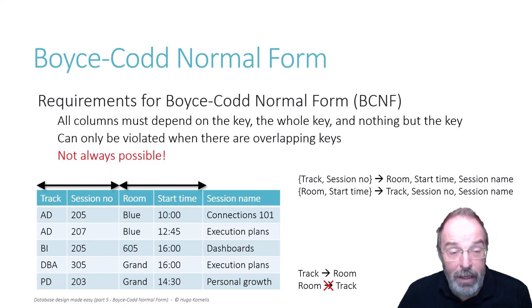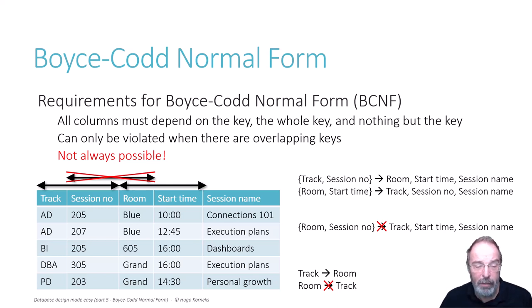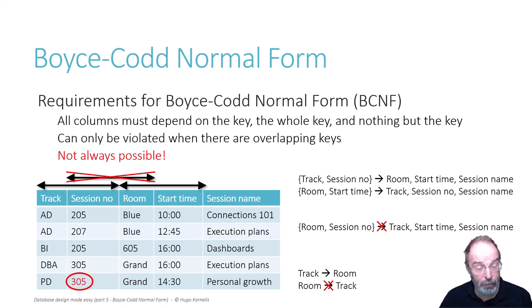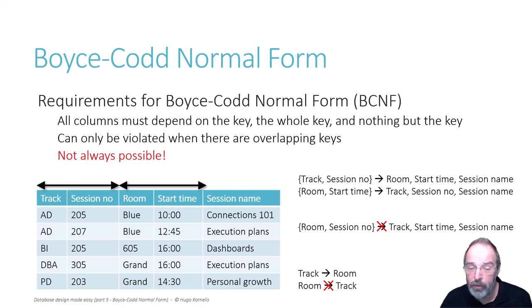How does this affect the additional dependencies and keys that we found? In the previous example, we thought we saw that room and session number determined track, start time and session name, which resulted in a key on session number and room. But that is no longer the case. Because room no longer determines track, we can no longer say that the combination grant 305 is automatically the combination DBA 305. It could also be the combination PD 305. The population on the left does not violate any business rule, but if we would add a key constraint on session number and room, then the database would prevent this valid population, which is of course not wanted. So there is no key on session number and room.